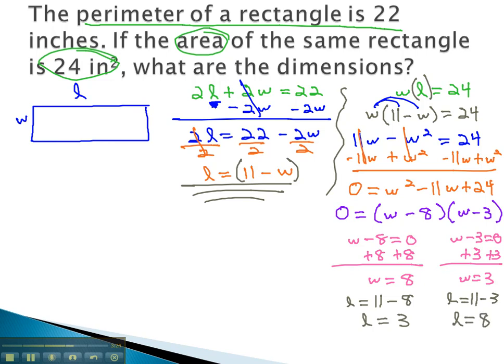Again, we see that the width and length are simply switched, and we're simply talking about the same rectangle turned on its side. This rectangle is 3 inches by 8 inches long. It will have a perimeter of 22 and an area of 24.